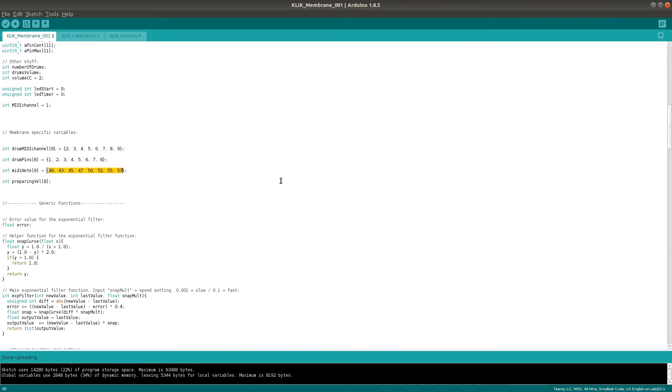These are the notes that the membrane instrument outputs. They correspond to a pentatonic scale. You might need to adjust your synth so that you get the drums you want on each output. The reason why I chose these notes instead of a standard midi drum output is so that the output makes sense if you use the membrane for something other than drums.